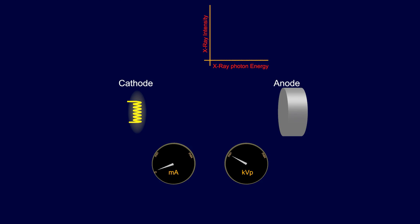This animation represents how increasing KVP with a constant MA impacts how electrons travel from the cathode to the anode. MA, or milliamperage, is the quantity of electrons boiled off of the filament. KVP, or kilovoltage peak, is the speed at which the electrons travel.